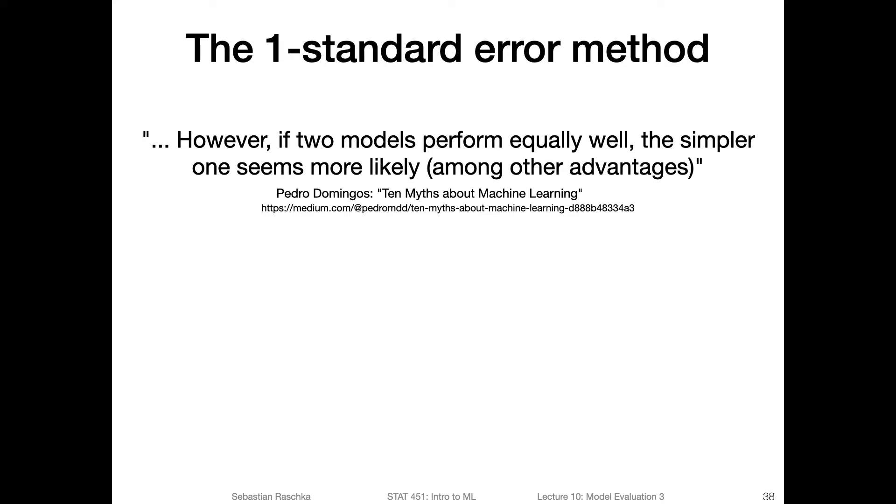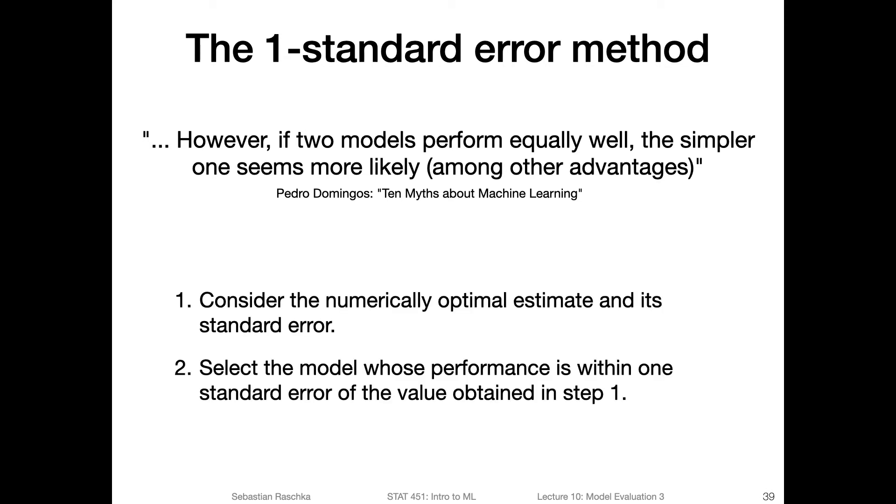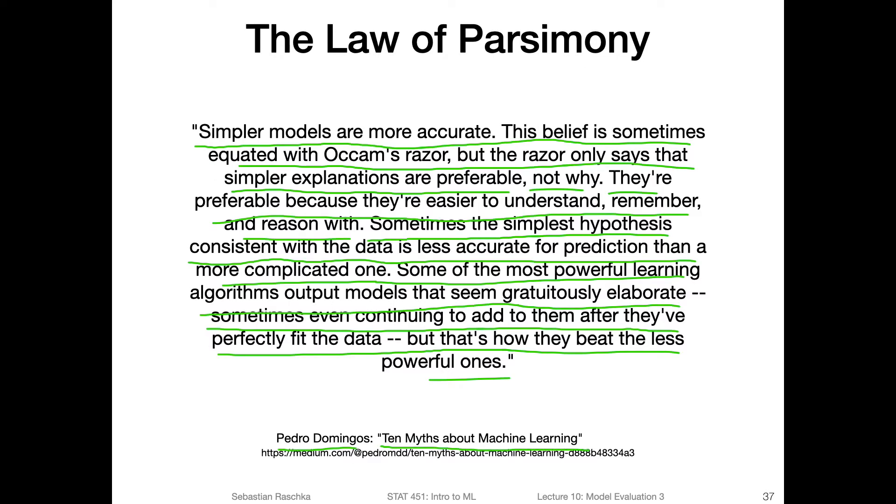He also further says that if two models perform equally well, the simpler one seems more likely, among other advantages. I'm not completely sure what he means by more likely, maybe he refers to explaining some natural phenomenon. But I don't think any of the machine learning models are related to some natural effect. It's more like we're approximating a function. Maybe the function is closer to the true function if it's a simpler one, but I don't know if there's evidence for that. However, I find selecting the simpler model has really the advantages like he said earlier: it's easier to understand, remember, and reason with, easier to analyze also. Sometimes it's even computationally cheaper. Usually, using a simpler model is preferable, especially if you have two models that give you almost the same performance. Why not go for the simpler one?